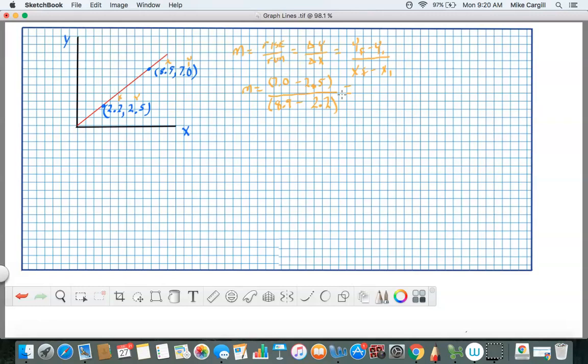Let's get our calculators out and just do a little quick math. 7.0 minus 2.5 and we get 4.5. Now let's see what x is. 8.9 minus 2.2 which equals 6.7. So far our slope equals 4.5 divided by 6.7 and that comes out to be 0.67. So now that's our slope, our slope equals 0.67.